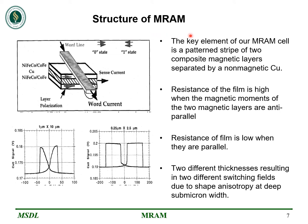Now let's take a look at the structure of MRAM. This is the same configuration — two ferromagnetic materials separated by a dielectric — that follows the same rules of parallel and anti-parallel behavior. In an anti-parallel state, the cell signal strength is lower and the output cell signal is degraded. In a parallel state, the output signal is very good. Two different thicknesses result in two different switching fields due to the shape and entropy at the deep sub-micron level, which plays a very crucial role in cell strength.